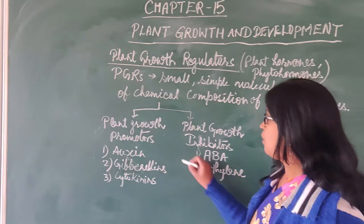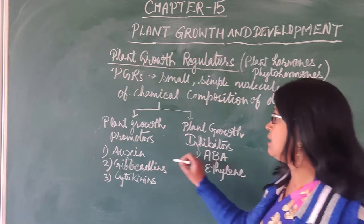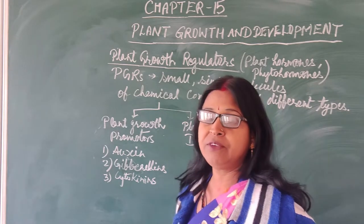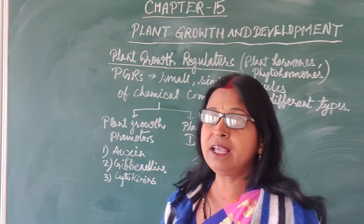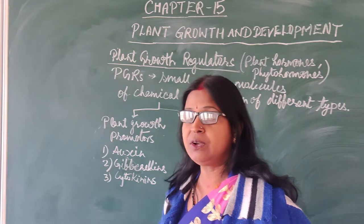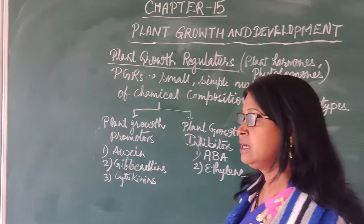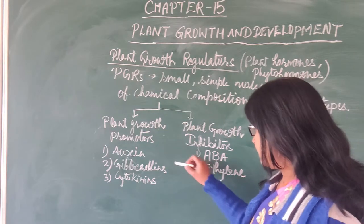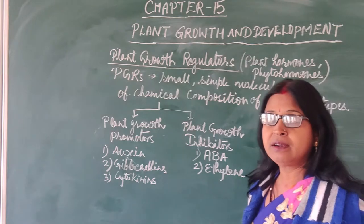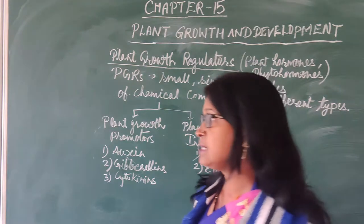Out of these five hormones, ethylene is present in gaseous form while the others are in liquid form. They are synthesized in the plant in various ways, and nowadays they are also synthesized artificially in the laboratory and used for different purposes. We will discuss how these plant growth promoters control various activities through slide diagrams and line diagrams.